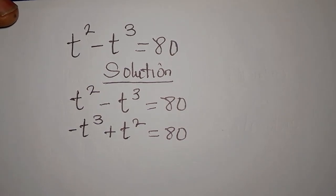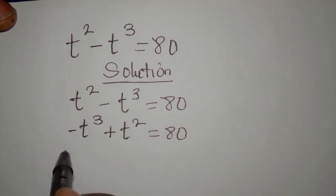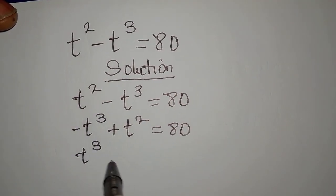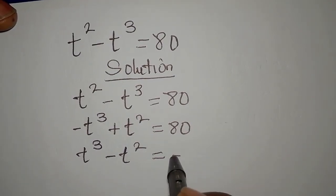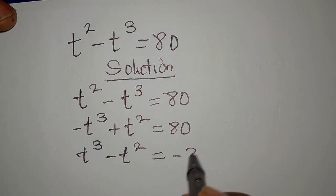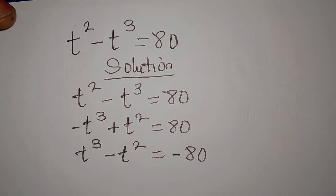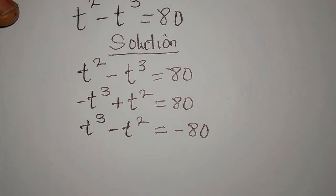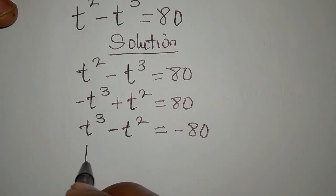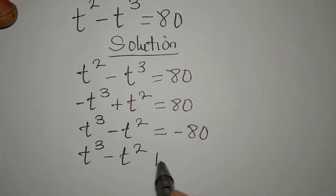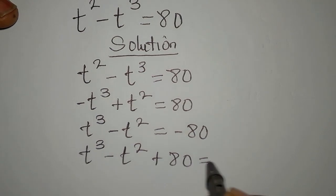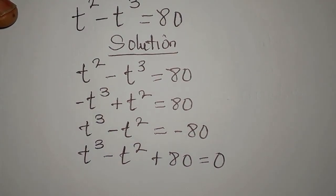I can multiply everything through so that I'll have t cubed, this will turn to negative t squared, and that will turn to negative 80. The next thing I will do is bring that 80 to the left-hand side so it becomes positive: t cubed minus t squared plus 80 equals zero. There's nothing on the right-hand side anymore.